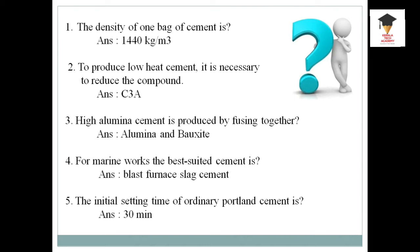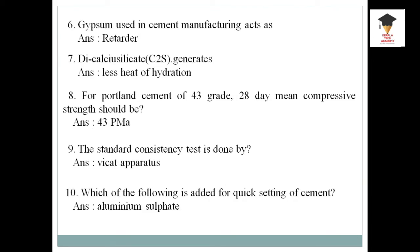Next: initial setting time of Ordinary Portland Cement is taken as 30 minutes. Next: the gypsum used in cement manufacturing acts as a retarder. Next question: dicalcium silicate generates less heat of hydration.